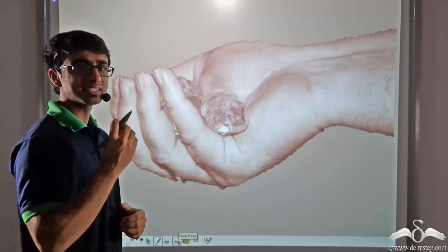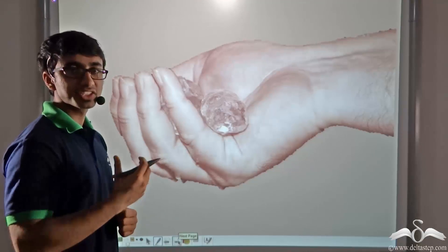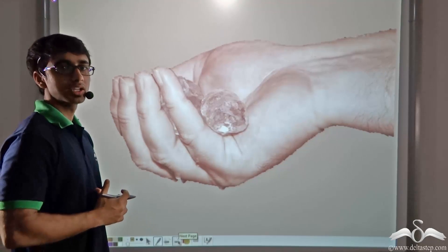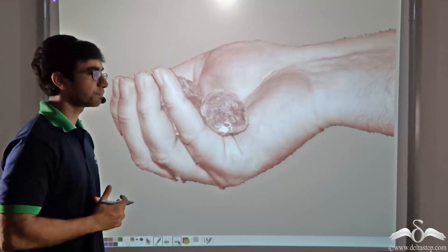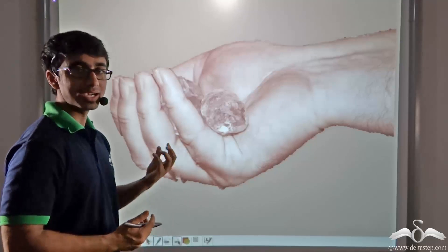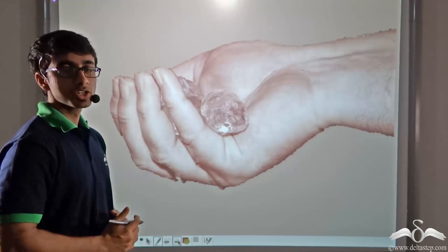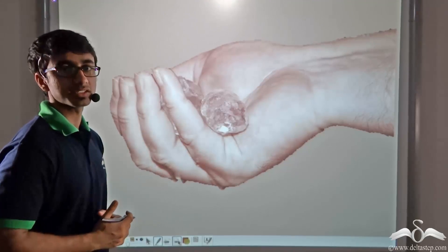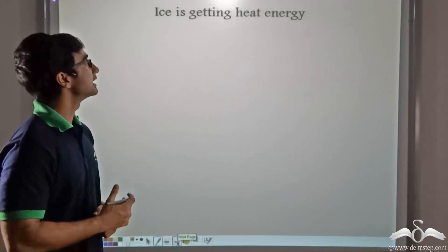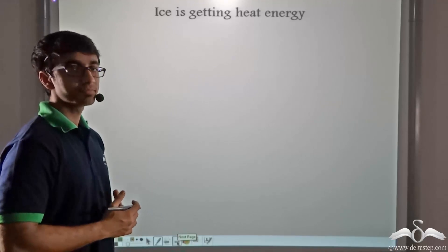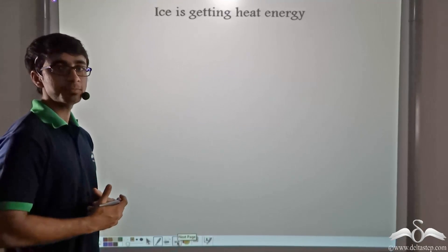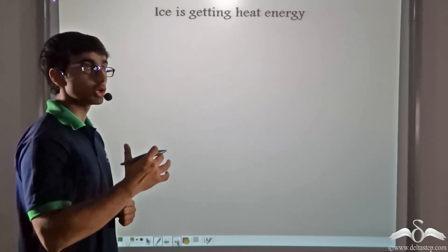Let us perform a very simple experiment. If you take a number of ice cubes in your hand during the summer when you're feeling very hot and you want to use these ice cubes to feel cool, what do you see? You will find that after a while these ice cubes melt and become water. So a change of state is taking place. Let us find out how it is taking place. Initially when you have kept ice in your hand, it is absorbing heat energy from the surroundings as well as from your body.